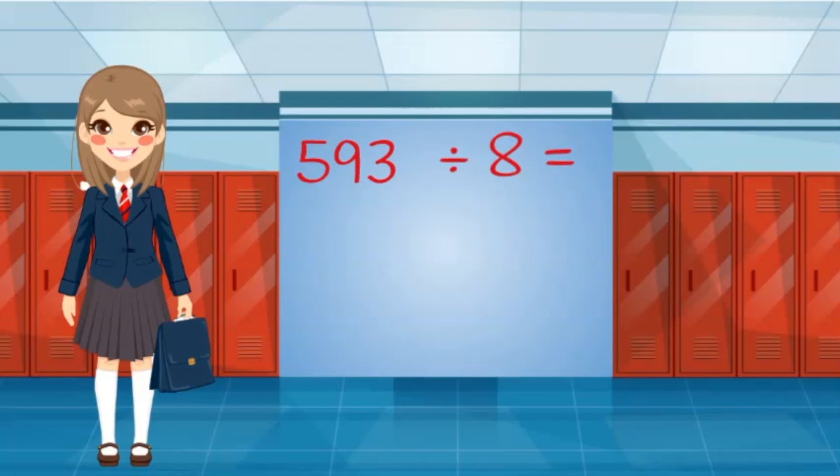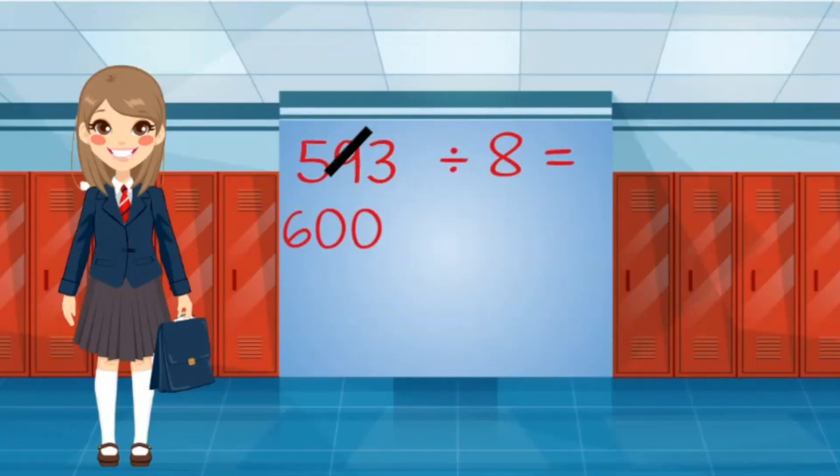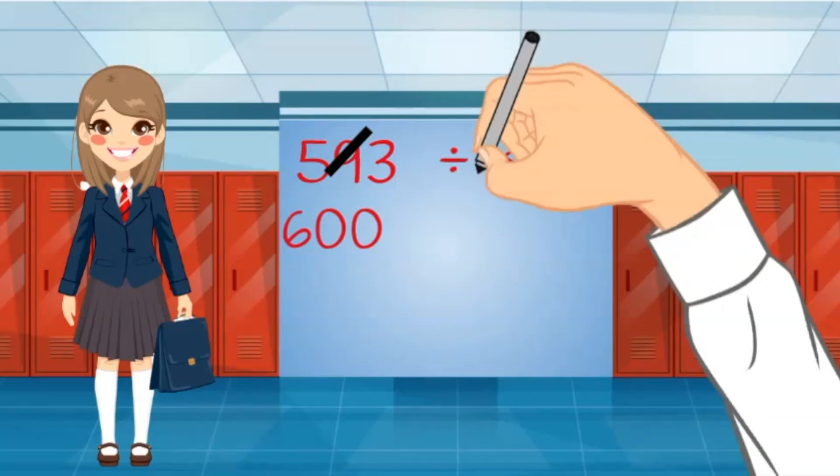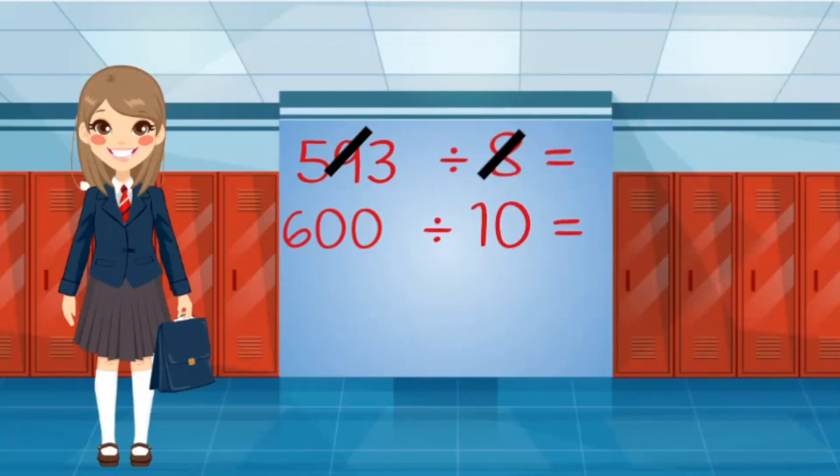I want to round to values I know will divide evenly. Since 593 is close to 600, I will round to that value. I know that 600 is divisible by 10, so it makes sense to round the value 8 up to 10. These values are much easier to divide.